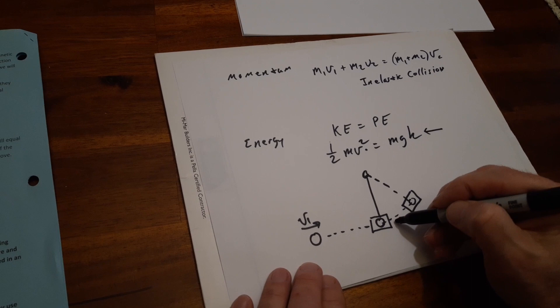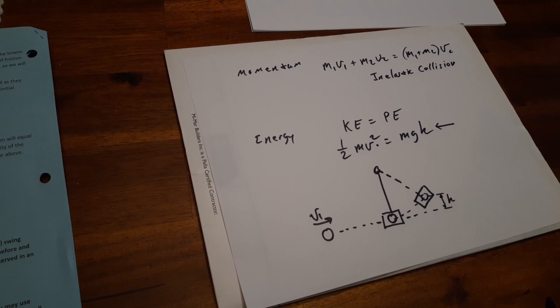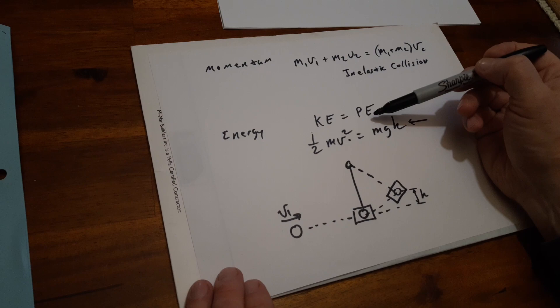So we have momentum, we have energy, we have a ball bearing that's going to be launched out of a gun, hit the pendulum, swings up to a height, and of course an angle.